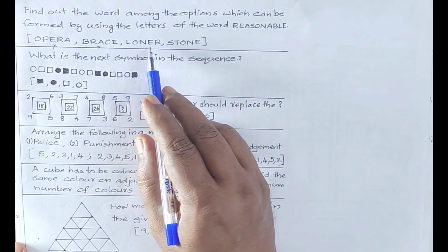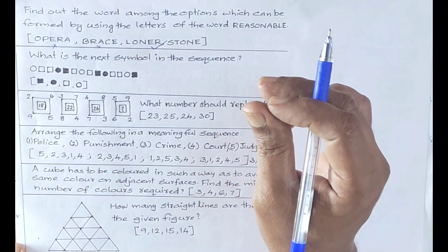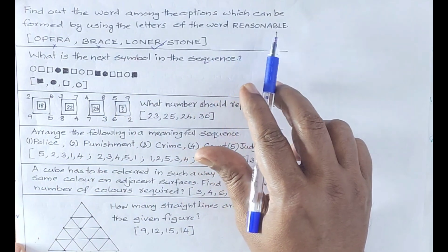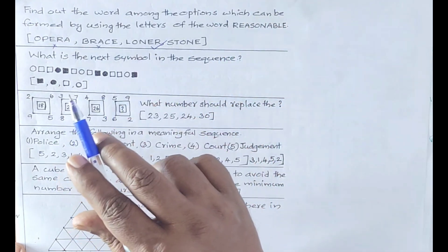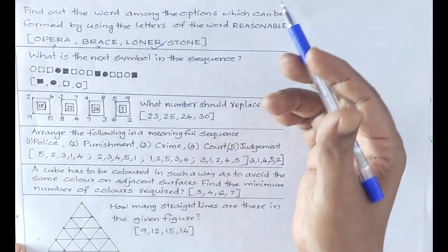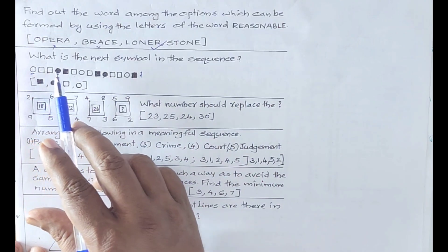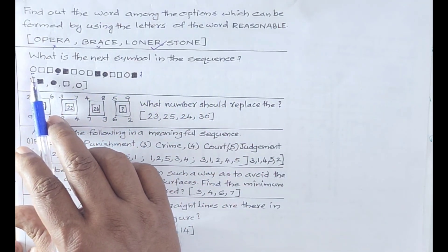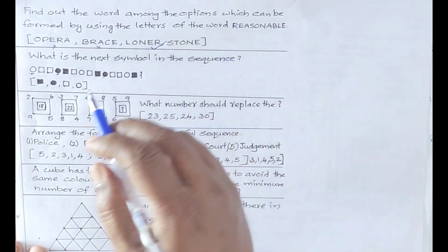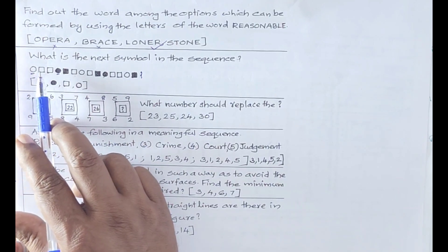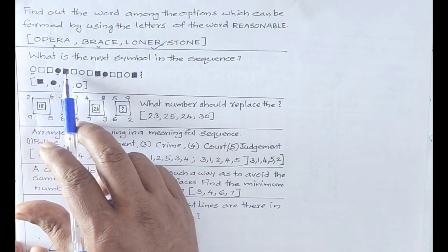Let me show you the test. The second question is: what is the next symbol in the sequence? You can see how many objects are present. These objects are present. You can see here the place is a square with a round, a square, a square. The marker is dark.